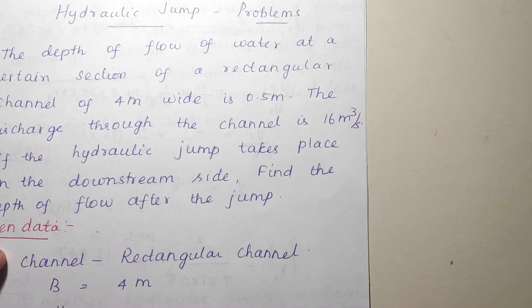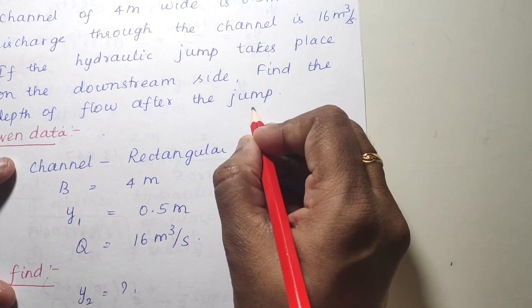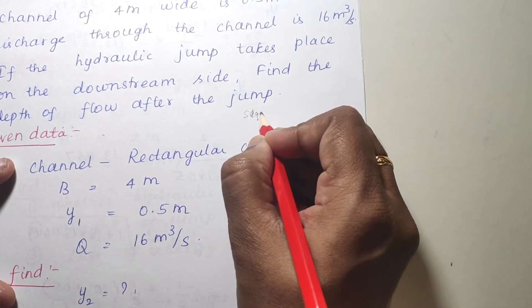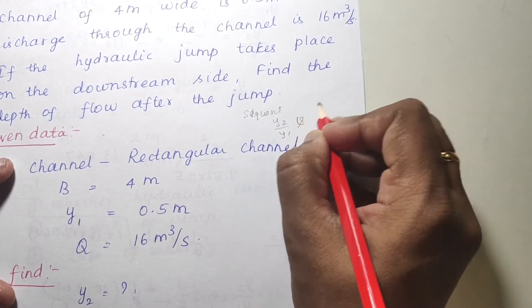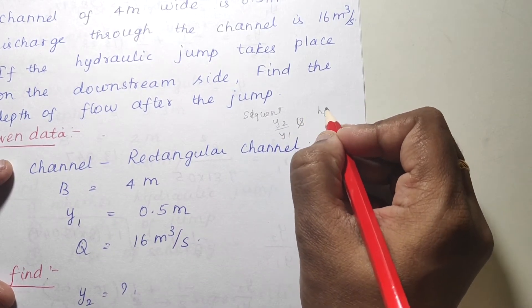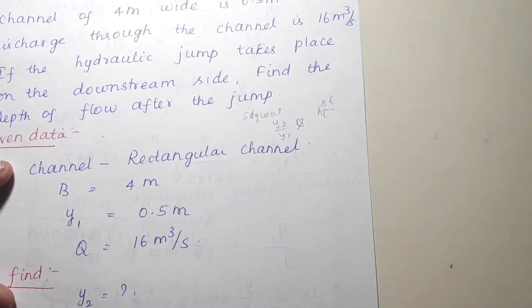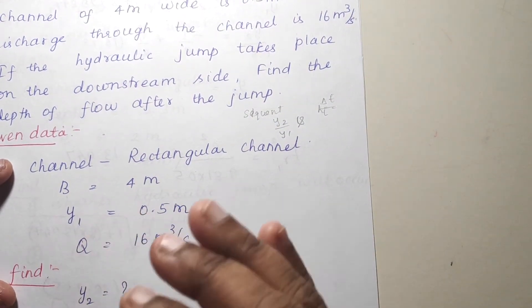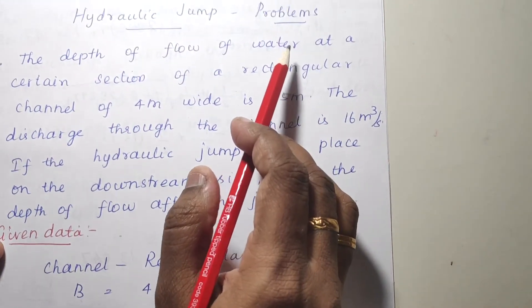In the last class we have seen the expression of loss of energy due to the hydraulic jump. We covered two derivations: one is the sequent depth formula, y2 divided by y1, and the expression for loss of energy delta E. With these equations there are some problems. Now we can look at the hydraulic jump problems.